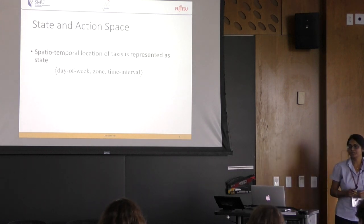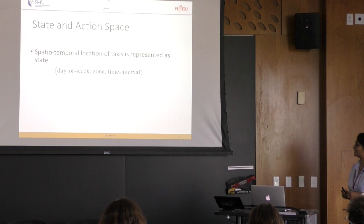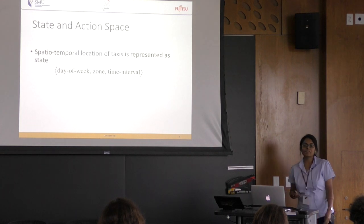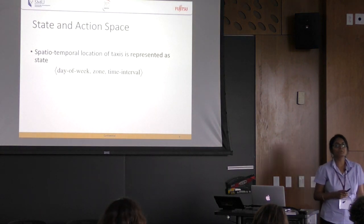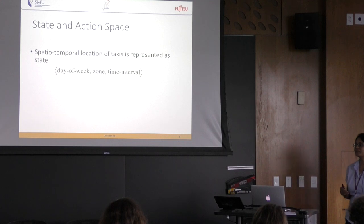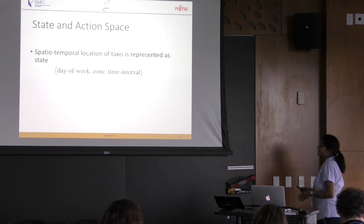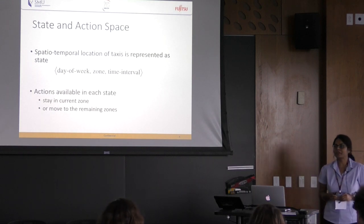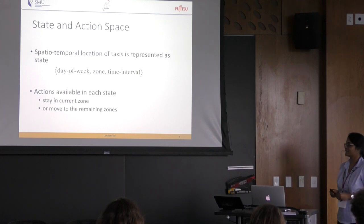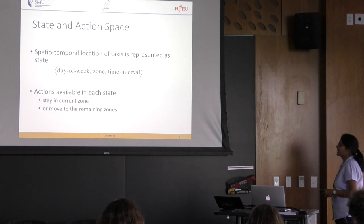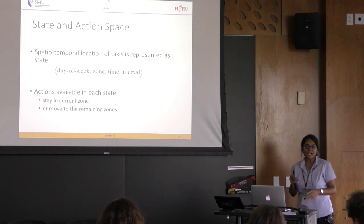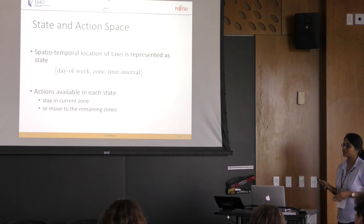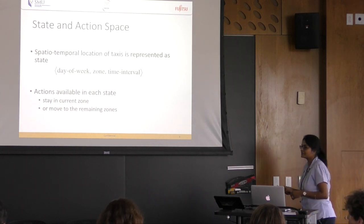The spatial-temporal location of a taxi is represented as the state of the taxi. We divide days into weekdays and weekends, divide the map into several zones, and divide 24 hours into six unequal time intervals based on traffic intensities. If there are n zones, the number of actions available in each state is n — stay in the current zone or move to one of the remaining n minus one zones. This is how our action space is correlated with the state space: if we change the zone structure, the number of actions in each state also changes.